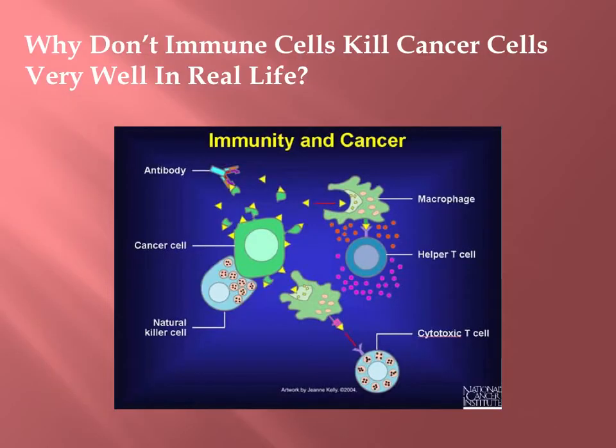We talked about in some earlier slides that our immune system usually kills the cancer — and when I say usually, I really mean it does usually kill the cancer, because we have cells in our body maybe on a daily basis that have blocked apoptotic pathways and are going through rapid replication, and our immune system destroys them and we never get cancer.